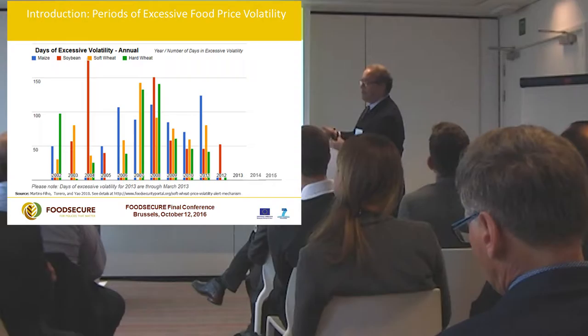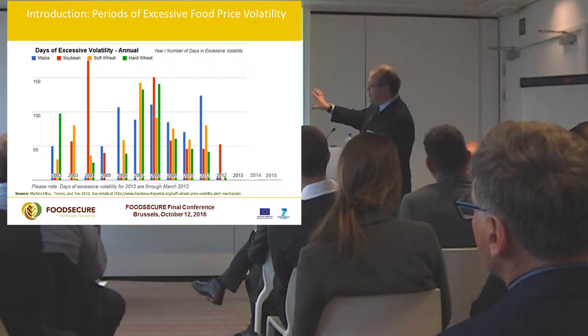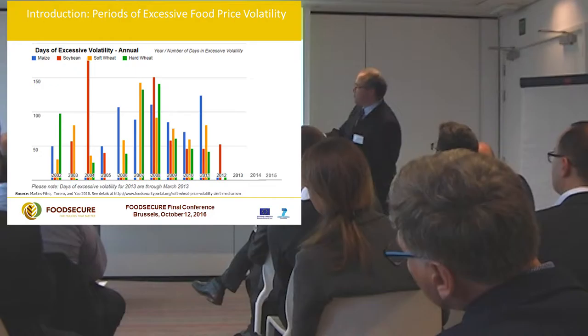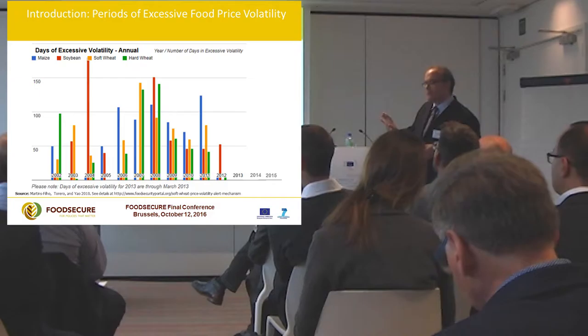We calculate this every day, estimating the number of excessive volatility days. To summarize: clearly 2007-2008 showed a massive amount of excessive volatility across all commodities — including some extreme values in soybeans — which later dissipated and has not been observed in the last three years.